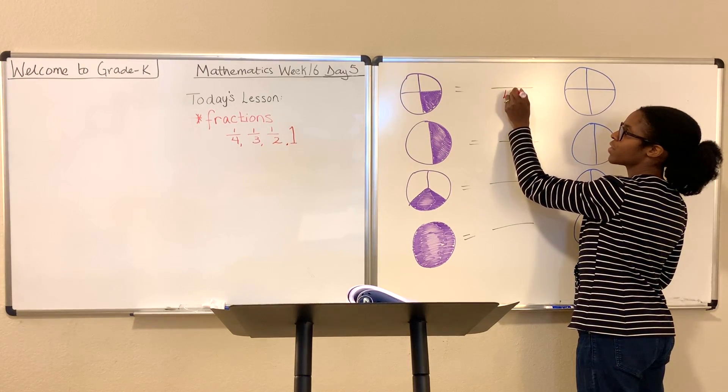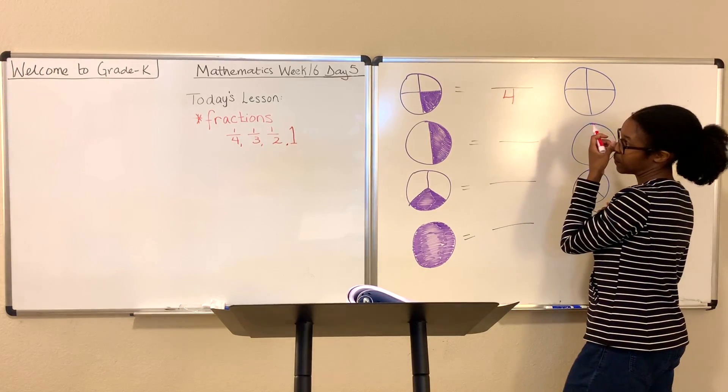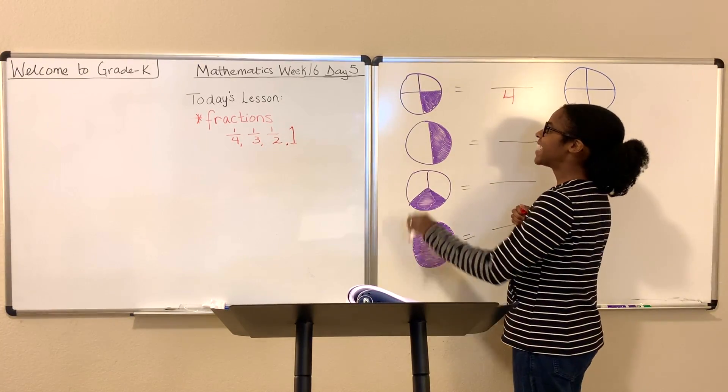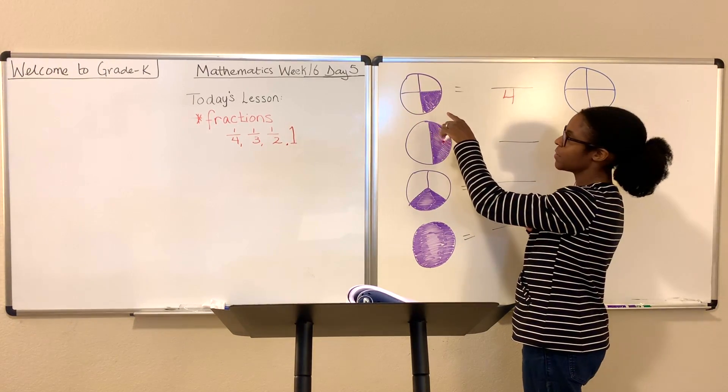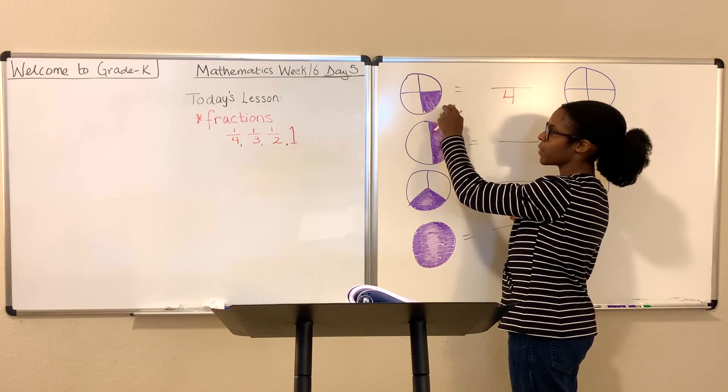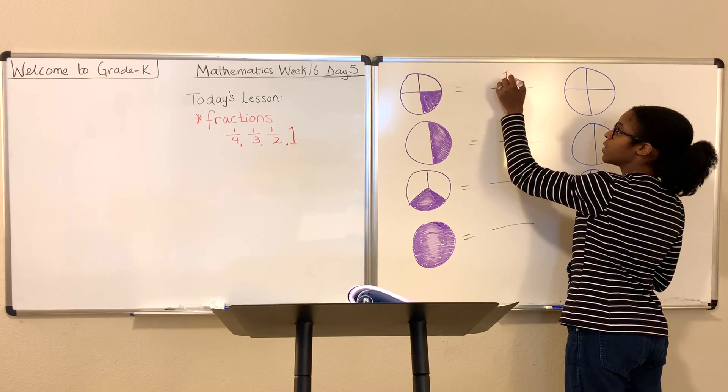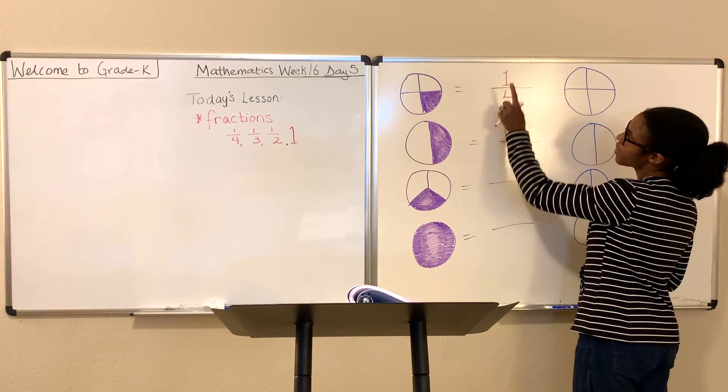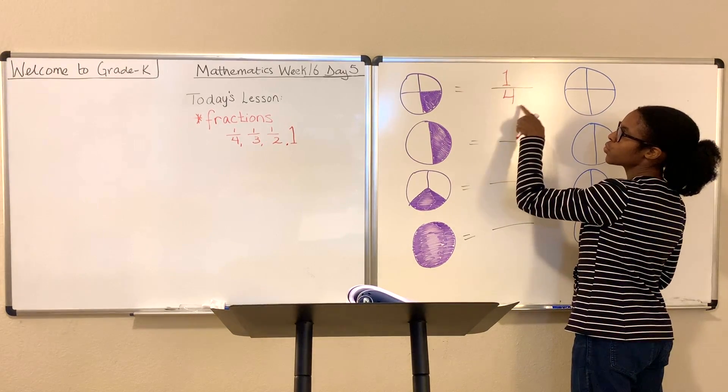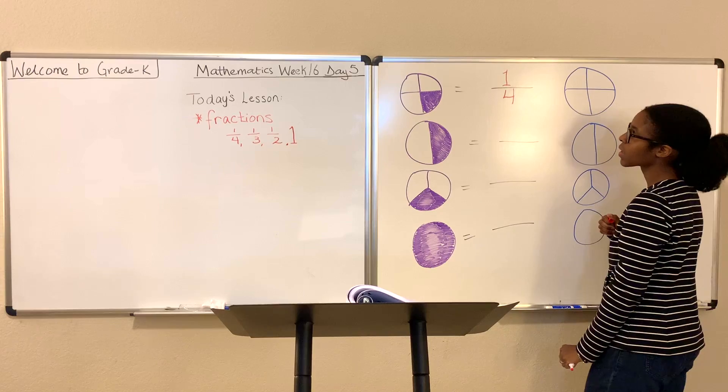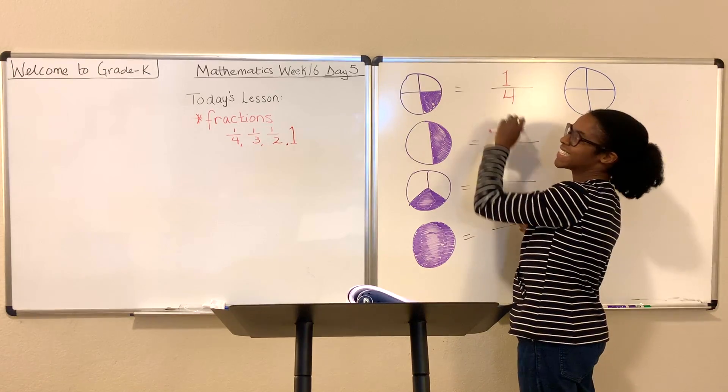So what we're going to do is we're going to write the number 4, which we like to call the denominator. We're going to write the number 4 below the line. Now, I have another question for you. How many parts is shaded? How many parts is shaded? One part is shaded, just this one part. So we're going to write this 1 at the top. We call the 1 the numerator. We're going to write the 1 shaded part at the top, write the number 1, and the total number of parts at the bottom.